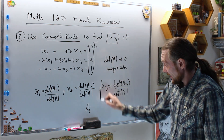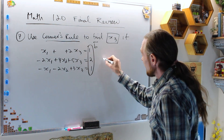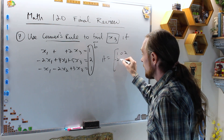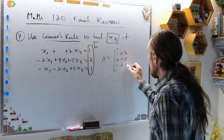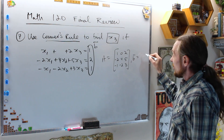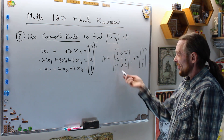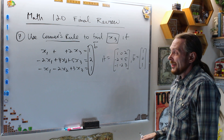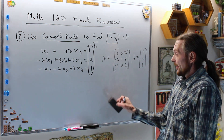Here Aᵢ is the matrix obtained from the coefficient matrix A by replacing column i with the vector b. We need x₃. From our system, A = [1, 0, 2; −2, 4, 5; −1, −2, 3] and b = [1, 2, 1]. First I want to compute det(A) — if it's zero, Cramer's Rule doesn't apply and there's no unique solution.